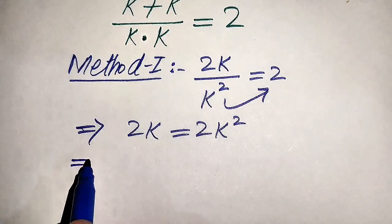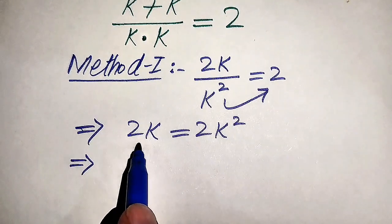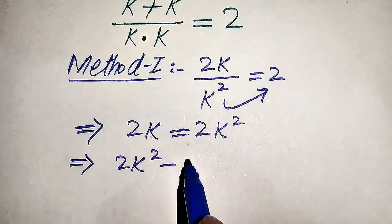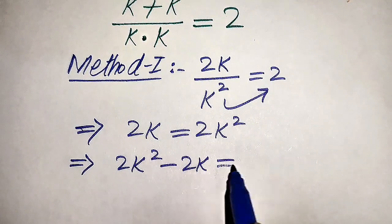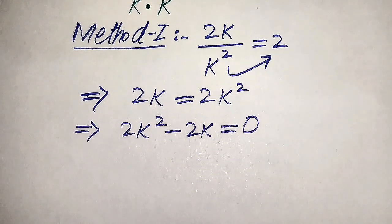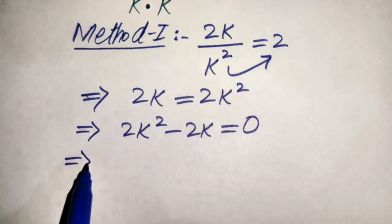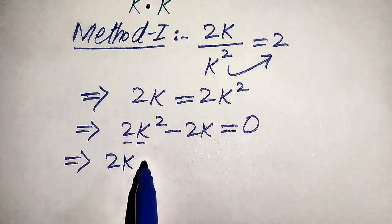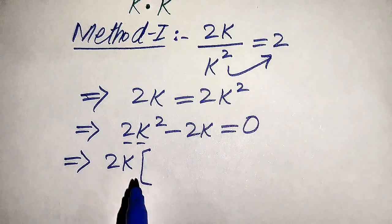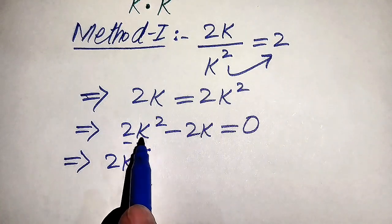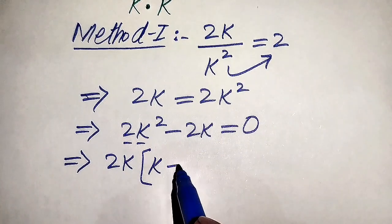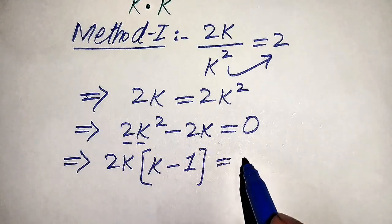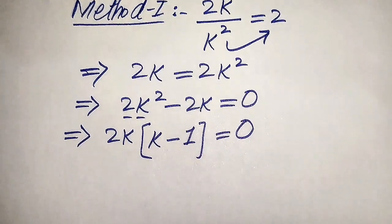Now we move 2k from the left hand side to the right hand side, giving us 2k squared minus 2k equals 0. Both terms involve 2k, so when we factor out 2k we get 2k times (k minus 1) equals 0.